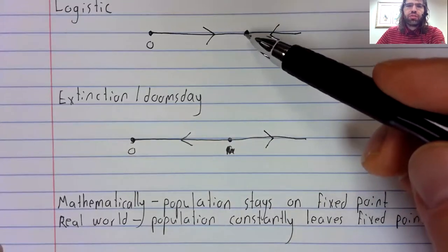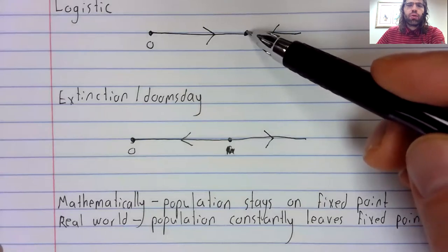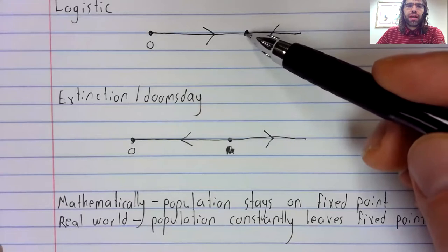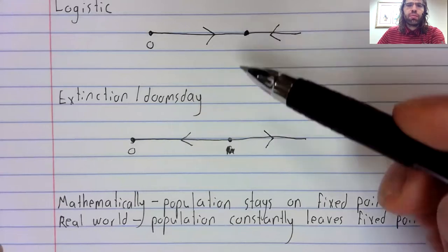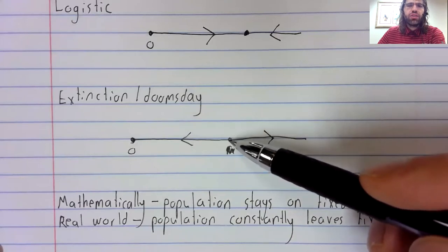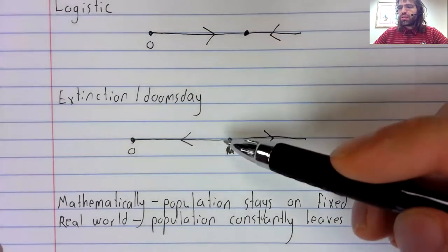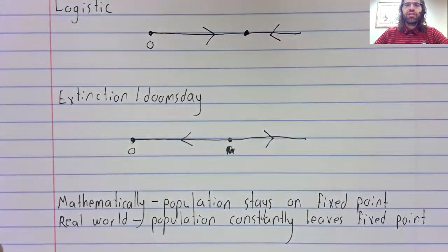So, this is a fixed point that we could see in the real world, with perturbations around this number. This is a fixed point that we can't see in the real world. In the next video, we're going to formalize this idea mathematically by saying that this fixed point and this fixed point have different stability.